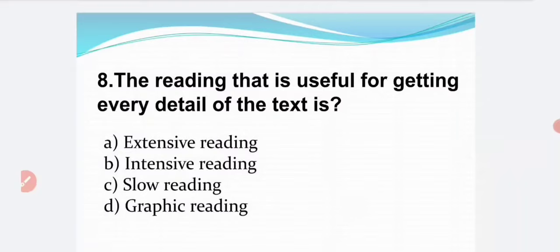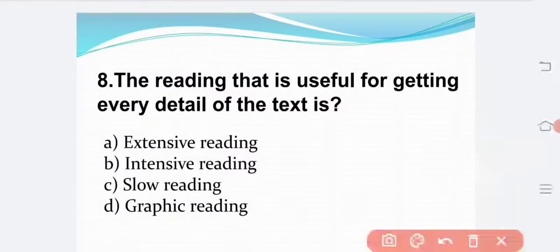Next bit. The reading that is useful for getting every detail of the text is: Option A — extensive reading. Option B — intensive reading. Option C — slow reading. Option D — graphic reading. The correct answer is Option B: intensive reading.